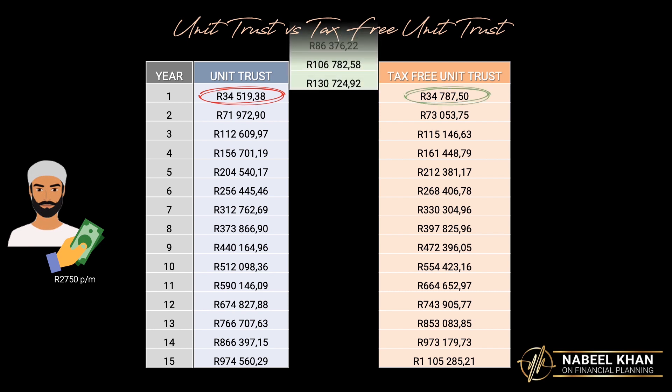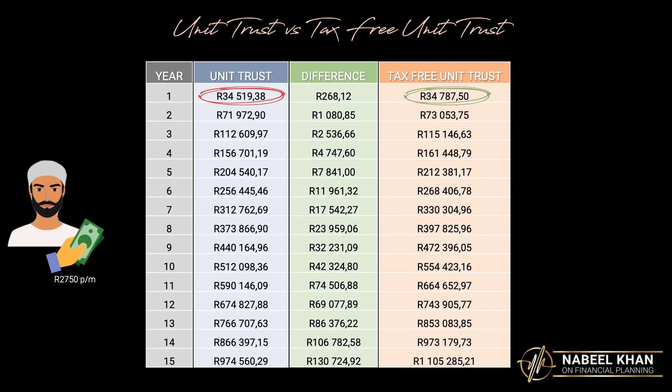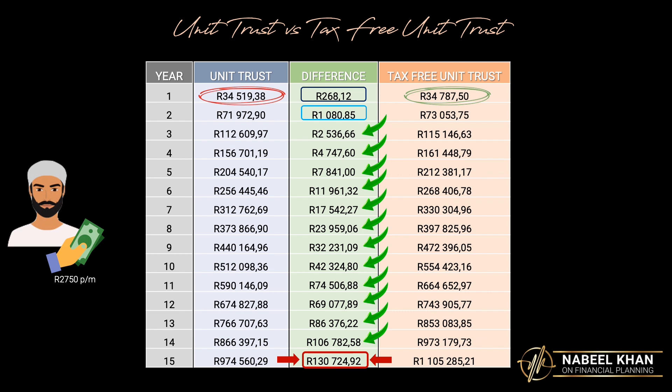What are the differences? The difference between the two in year one is only R268, but it jumps to over R1,000 in year two and keeps getting bigger and bigger as the tax savings starts compounding. How crazy is that — in 15 years there's a massive difference of over R130,000, all tax-free? Impressive, right?